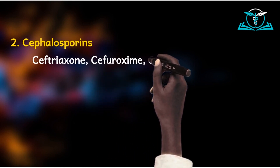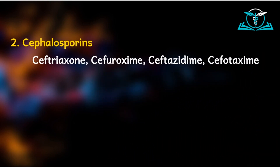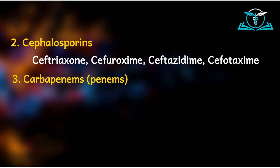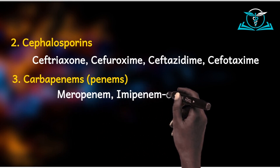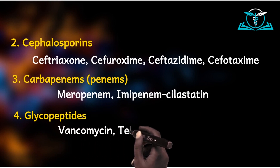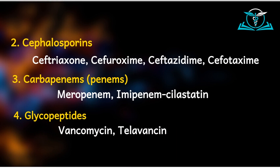Apart from the penicillins, another group of antibiotics which work on the cell wall are the cephalosporins. They have the prefix 'CEF-'. So we have ceftriaxone, cefuroxime, ceftazidime, and cefotaxime. Then we have the carbapenems, which end with the suffix '-penem'. So we have meropenem and imipenem-cilastatin. Lastly, we have the glycopeptides, which include vancomycin and telavancin. This brings us to the end of how to remember the various antibiotic classifications and their mechanisms of action.